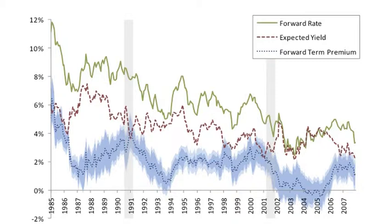The difference between the two is the risk premium or forward term premium — what investors demand in terms of compensation for bearing the risk of making a loan today at a known interest rate, given that the world may be very different in two years from now. The blue dotted line is this forward term premium, and the shading around it represents standard error bands or confidence bands.